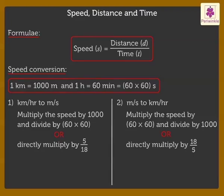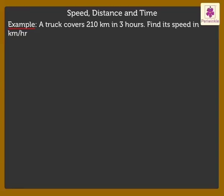Now let us solve an example to understand how to do it in a better way. A truck covers 210 kilometers in 3 hours. Find its speed in kilometer per hour and meter per second. It is given that distance is equal to 210 kilometers, time is equal to 3 hours.